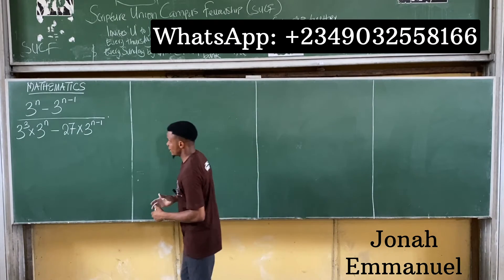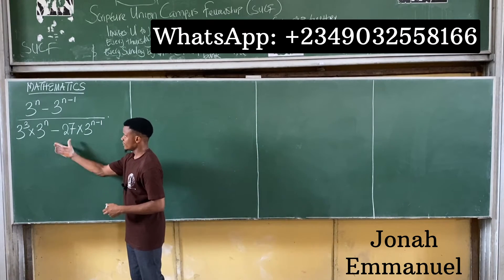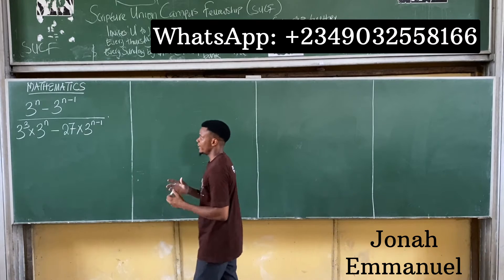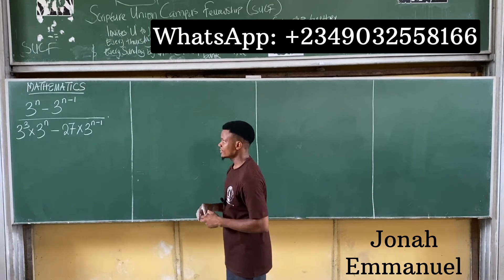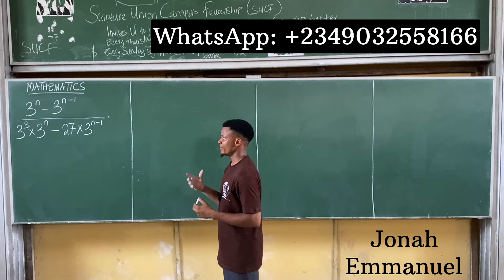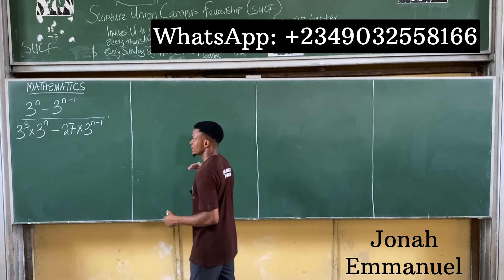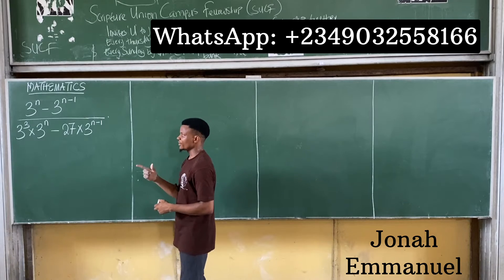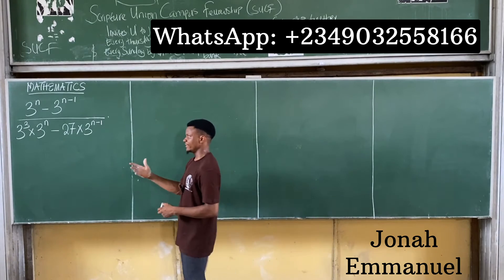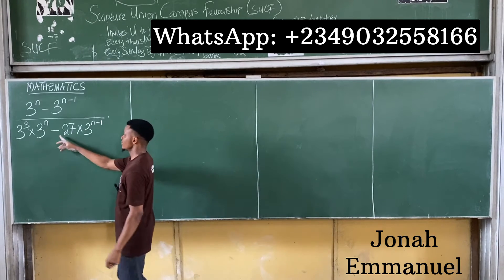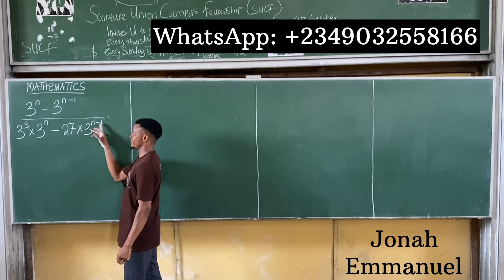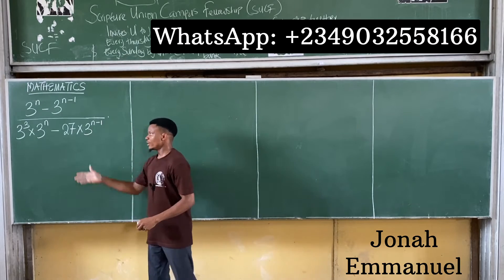In this case we are having this question here, which is: 3 to the power n minus 3 to the power n minus 1, divided by 3 to the power 3 times 3 to the power n minus 27 times 3 to the power n minus 1.